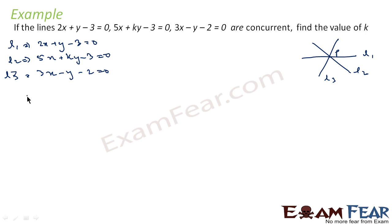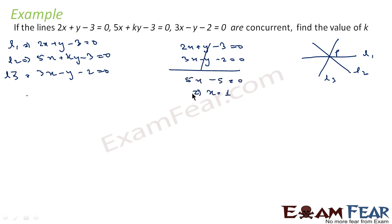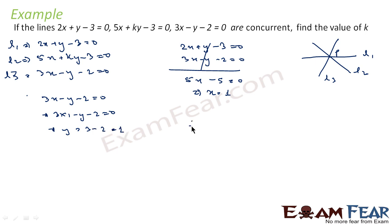So we have L1: 2X plus Y minus 3 equals 0, and L3: 3X minus Y minus 2 equals 0. Adding these two equations, we get 5X minus 5 equals 0, so X equals 1. Putting X equals 1 into L3: 3 times 1 minus Y minus 2 equals 0, giving Y equals 1. So the common point P is (1, 1).